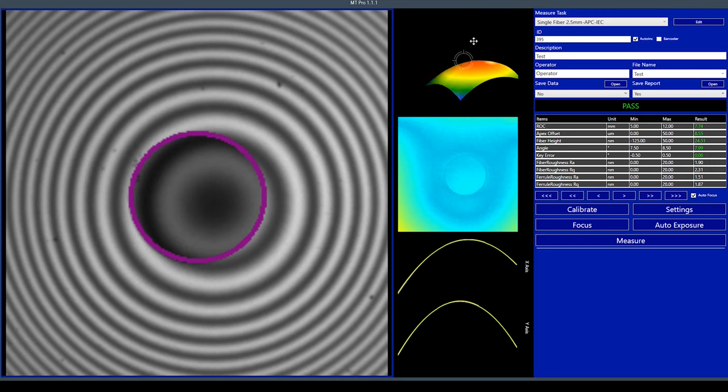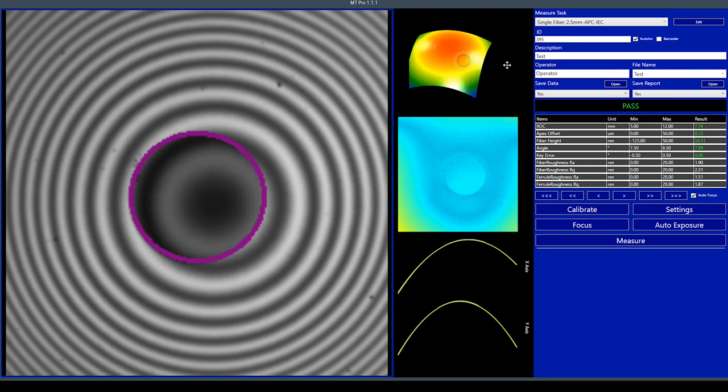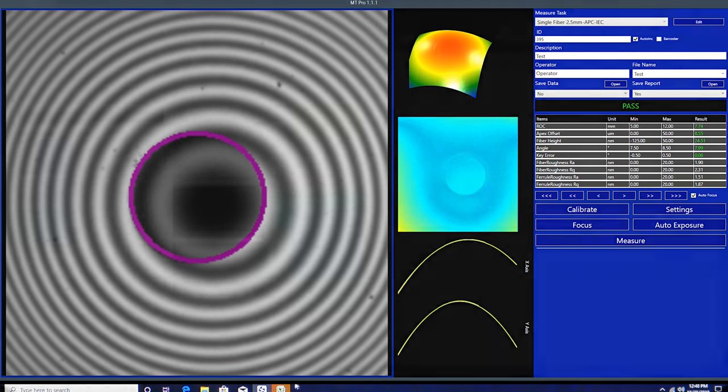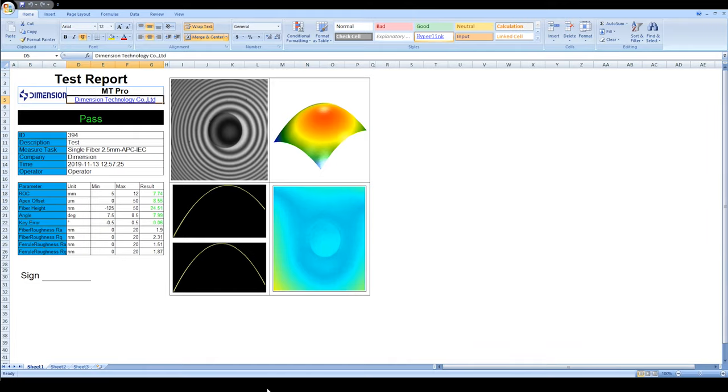You will be able to see the polishing results by turning the 3D profile. The results can automatically be saved to an Excel file.